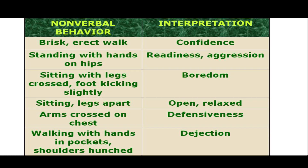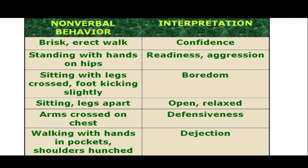Standing with hands on hips can mean readiness — 'I am ready' — but it can also mean aggression. Sitting with legs crossed with a foot kicking slightly can indicate boredom. Sitting with legs apart: open and relaxed. Arms crossed on chest: defensiveness. Sometimes people even use a folder placed in front, indicating they are not comfortable with the person sitting before them. Walking with hands in pockets with shoulders hunched again indicates dejection.